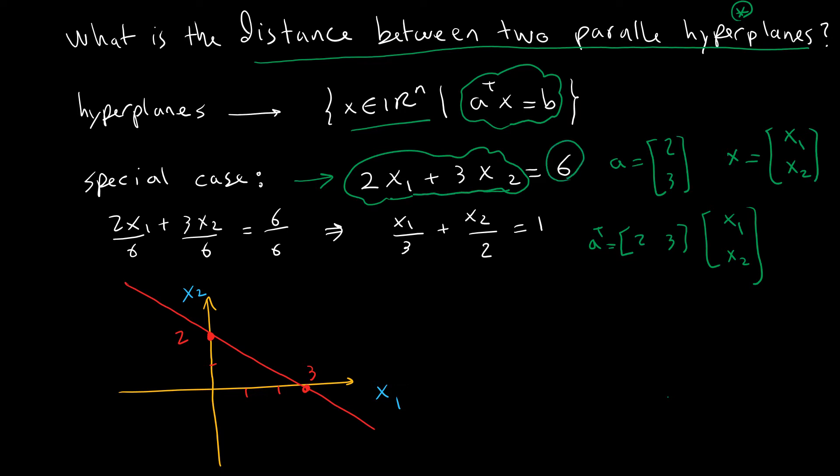Now I want to plot this. To plot this, I should make the right-hand side equal to 1. By dividing by 6, I get x1/3 + x2/2 = 1. These little numbers in the denominators exactly tell us the intersection of the hyperplane with different axes.